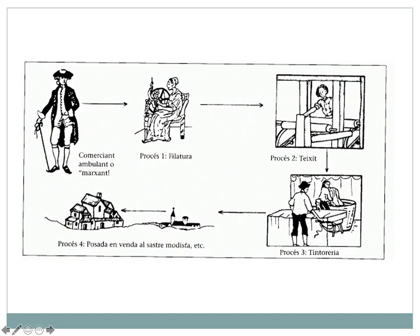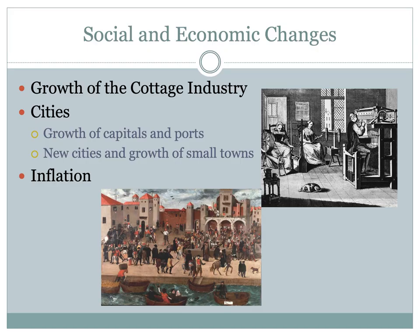The third cottage would dye the cloth, and then it would be given back to the merchant, who would pay everyone for their labor. The development of the cottage industry is an important part of the increasing international capitalism of Western Europe, because many of the goods produced would be sold at international markets. The cottage industry was especially well suited for producing things like textiles, housewares, buttons, gloves, and musical instruments — more common everyday goods, not luxury goods.